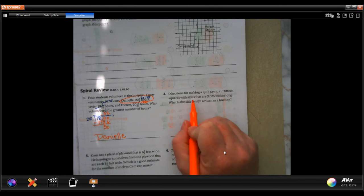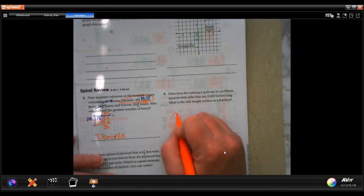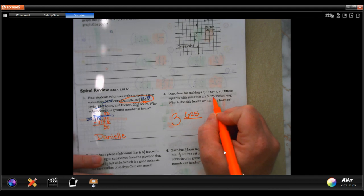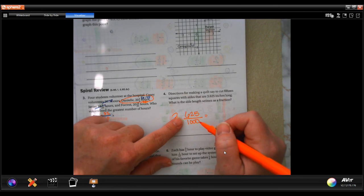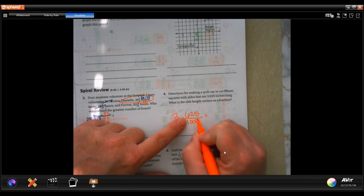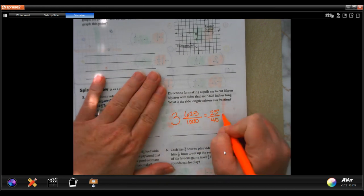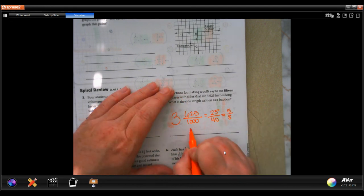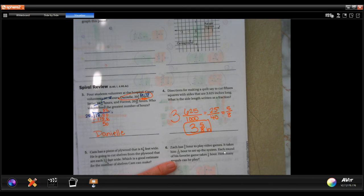Directions for making a quilt: they'd cut 15 squares with sides that are 3.625 inches long. What is the side length written as a fraction? All right, so you have three, we have 625, and that ends in the tenth, hundredth, thousandth place, so we're going to put it over 1,000. But we need to reduce that drastically. So I know that 25 will go into both of those. So 25 will go into 625 actually 25 times, and it will go into that 40 times. It looks like I can still reduce it. So 5 will go into 25 five times, and 5 will go into 40 eight times. So there you go. Oh, and we need to put inches.